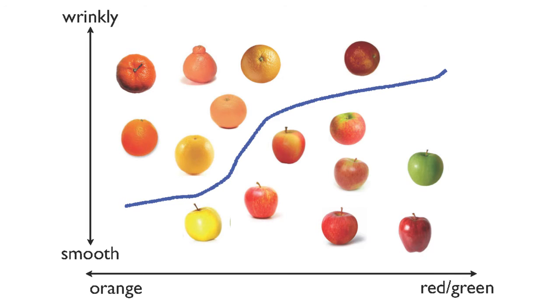After looking at how these features are associated with being an apple or an orange, it can learn to predict whether a new fruit image is either an apple or an orange automatically, with no assistance from a person.